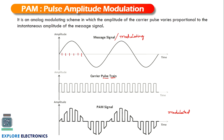At each regular interval, as per the carrier, we plot with respect to amplitude. As amplitude increases in the modulating signal, the pulse amplitude in the modulated signal also increases, and similarly pulse amplitude decreases. This is the PAM signal, where each sample is proportional to the amplitude of the modulating signal. The disadvantage of PAM is that the pulses have different amplitudes — we cannot keep the amplitude constant.